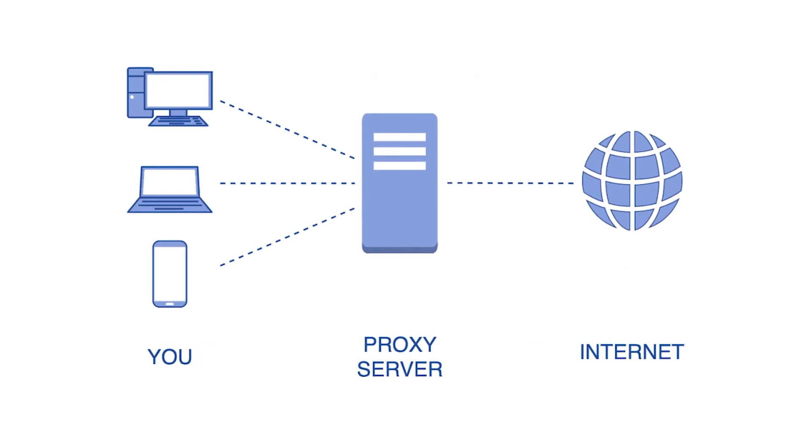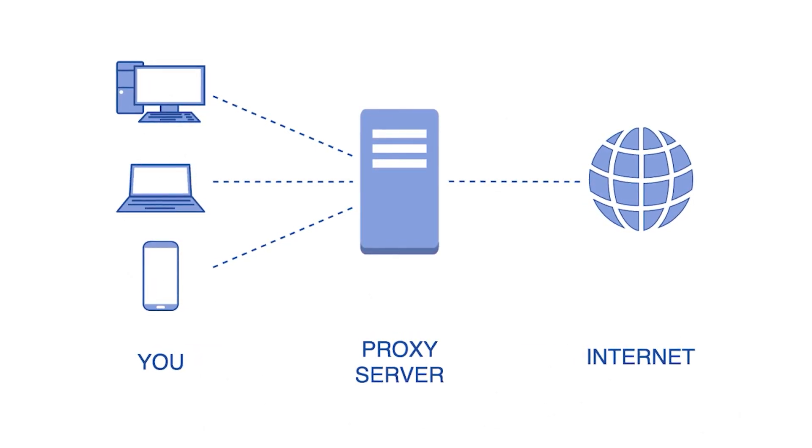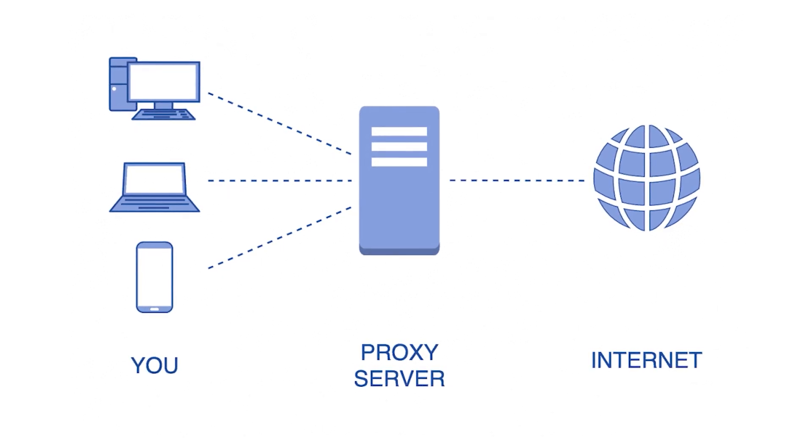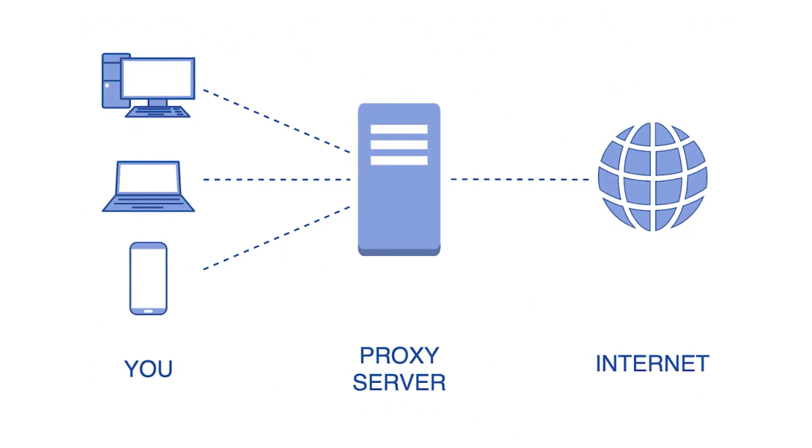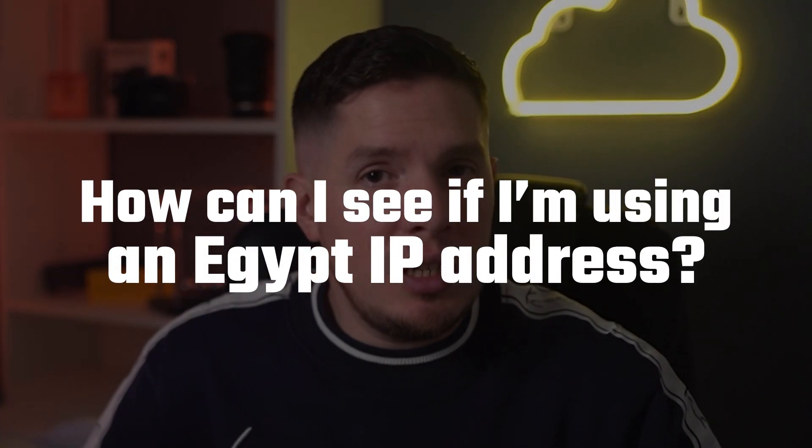The next question: how else can I obtain an Egypt IP address? There are other ways to get an Egypt IP address, but they lack the security features that VPNs like ExpressVPN and CyberGhost provide. The most common alternative is to use a proxy server. This does give you a new IP address that lets you access Egyptian websites, but it lacks encryption and DNS/IP leak protection, meaning your personal data is at risk of third-party exposure.